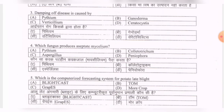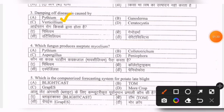Next question: damping off disease is caused by — options are Pythium, Ganoderma, Verticillium, or Ceratocystis. The correct option is A — Pythium is the correct answer.